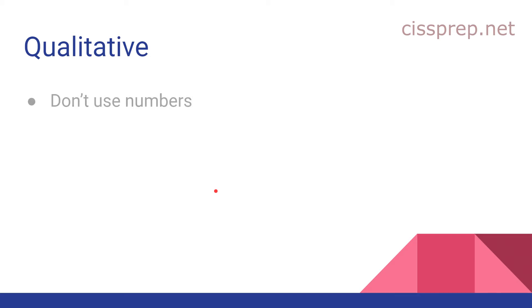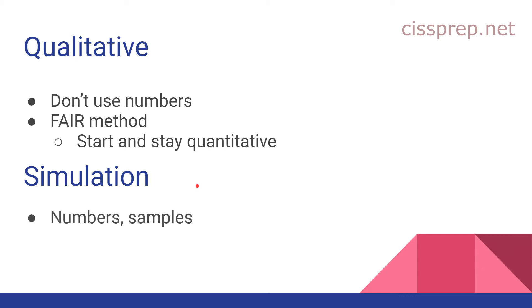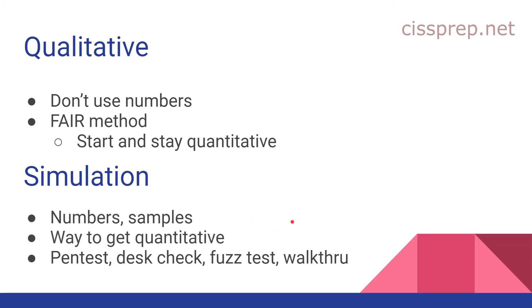Now some new concepts related to risk evaluations. With qualitative, they're basically saying that everyone tries to use numbers, and to not do that unless you're using something called FAIR, which provides a way for you to start and stay quantitative even if the risk itself begs for a qualitative approach. It also talks about simulation as a way to get numbers and samples in order to be quantitative. Some examples would be doing penetration tests, desk checks, fuzz tests, and walkthroughs.